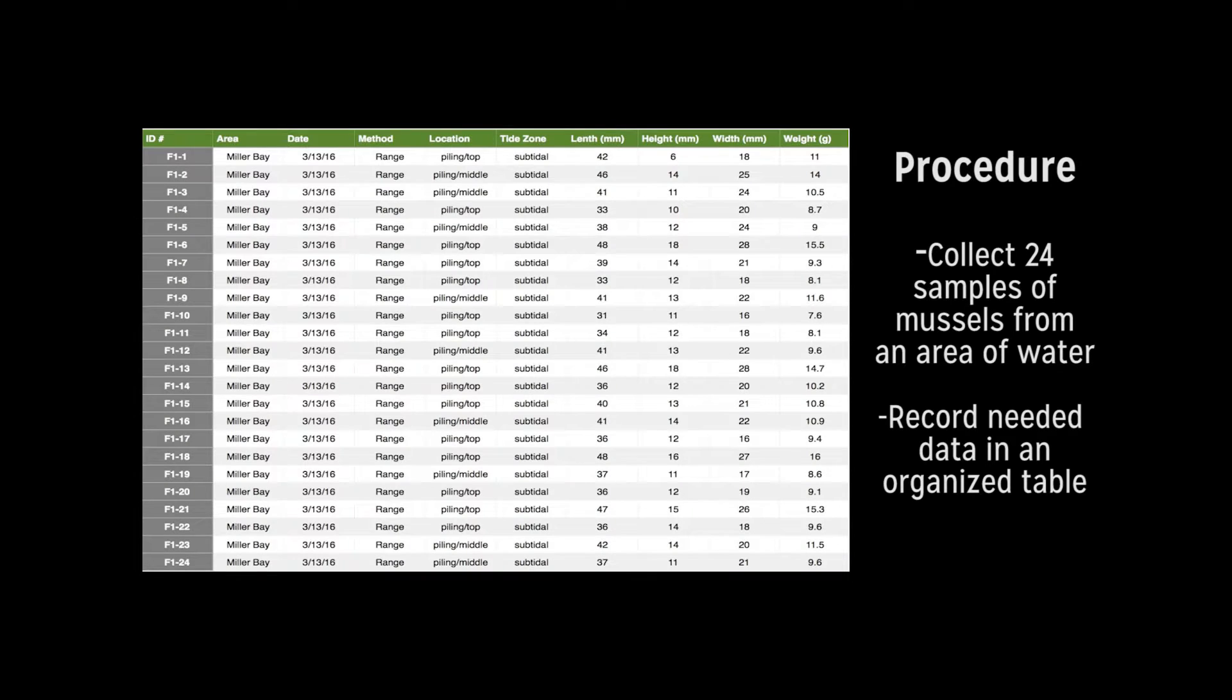First, we collected 24 mussels from a dock in Miller Bay owned by one of our group members. If you were planning to conduct this experiment, you would need a license to collect samples from bodies of water that are not your property. We recorded the area of collection and the location. For example, were they in a piling and where in the pile you took them from.